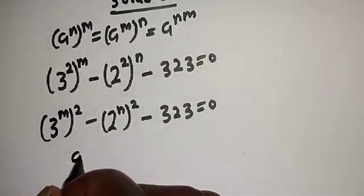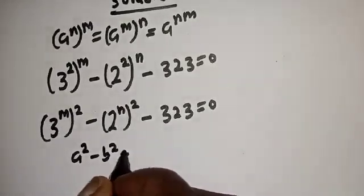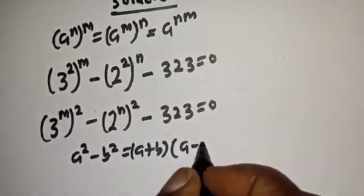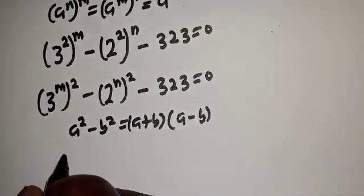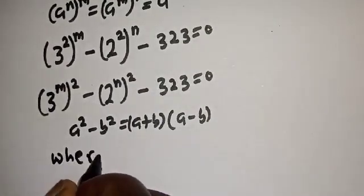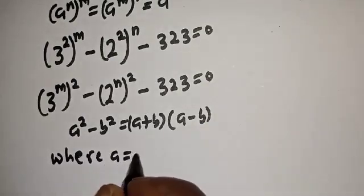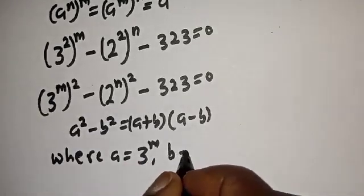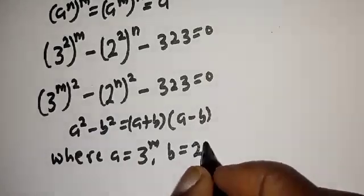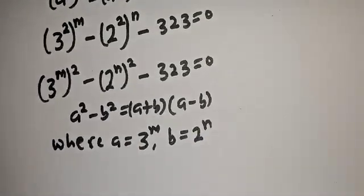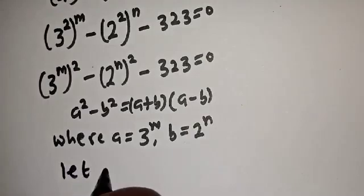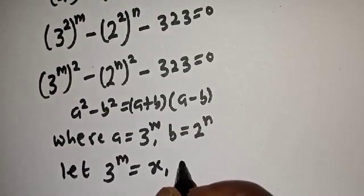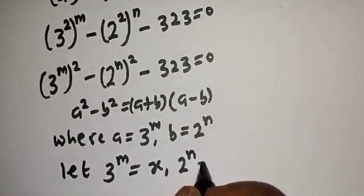Also, remember this rule: if you have a squared minus b squared, this is equal to a plus b multiplied by a minus b. From here, where a is equal to 3 raised to power m and b is equal to 2 raised to power n. In this case, let 3 raised to power m equal s and 2 raised to power n equal y.